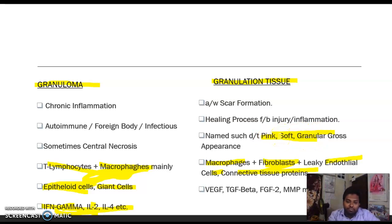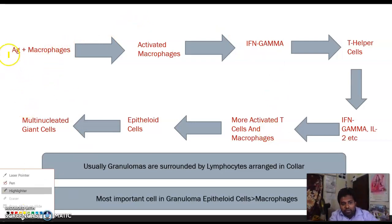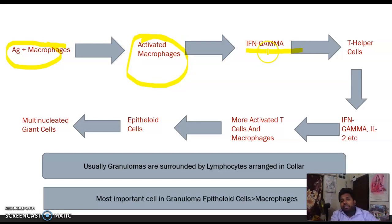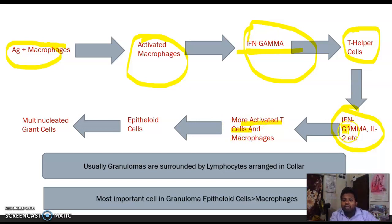Regarding the process of granuloma formation: whenever a chronic infection or foreign body appears and neutrophils fail, macrophages are activated. They capture the antigen and release interferon-gamma — the central cytokine mediator. Interferon-gamma activates Th1 helper T cells, which then secrete interferon-gamma and interleukin-2 again, activating more T cells and macrophages in a chain reaction.